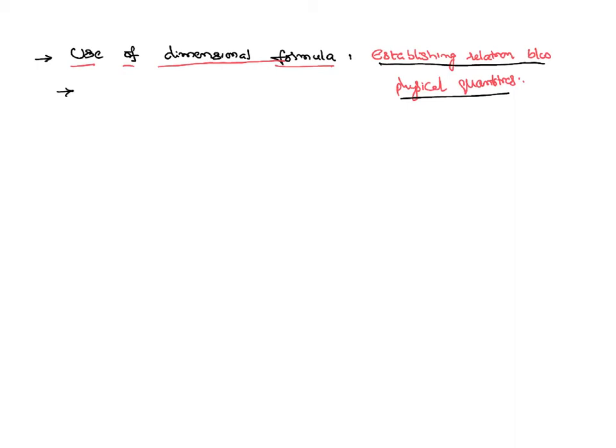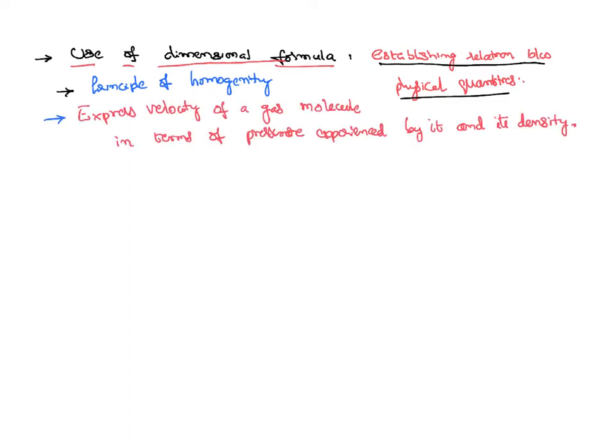a concept of principle of homogeneity, which tells you that the dimensions of LHS side of the equation shall be equal to the dimensions of the RHS side of the equation. So we are going to use principle of homogeneity. Then how do you find a relation between the physical quantities? I will explain it by taking an example.